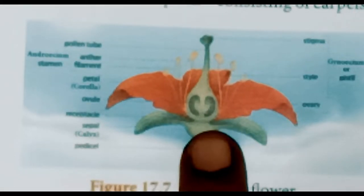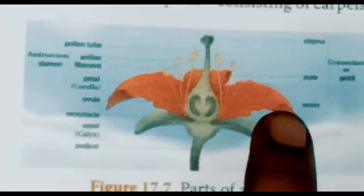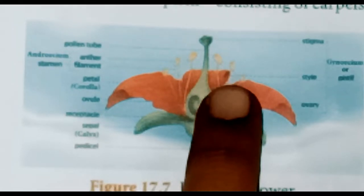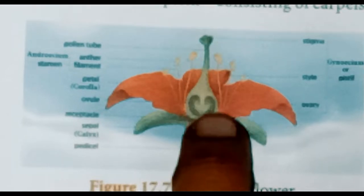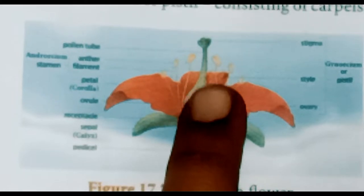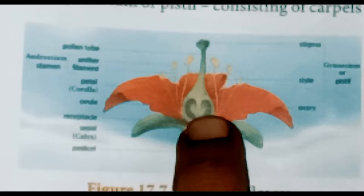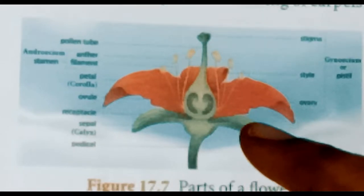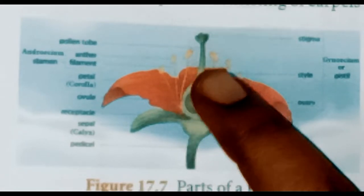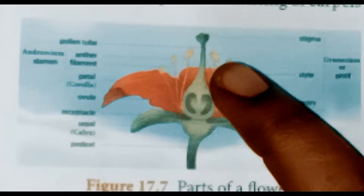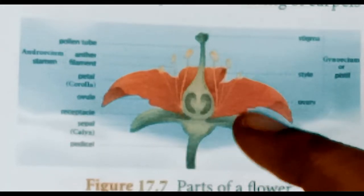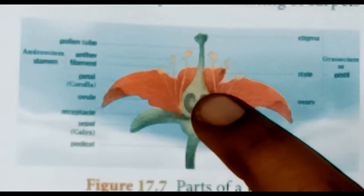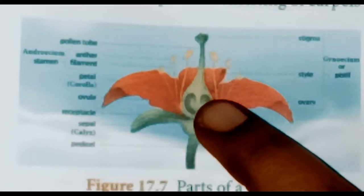Calyx consists of the green-colored sepals, whereas corolla consists of the colorful petals. Androecium — the yellow-colored structure — consists of the stamens, which carry the male gamete. The green-colored structure is called the gynoecium or pistil, which consists of the carpels. The calyx and corolla are called non-essential or accessory whorls, whereas the androecium and gynoecium are called essential whorls. The calyx and corolla do not take part in reproduction directly, whereas the androecium and gynoecium take part in reproduction directly and so are termed essential whorls.